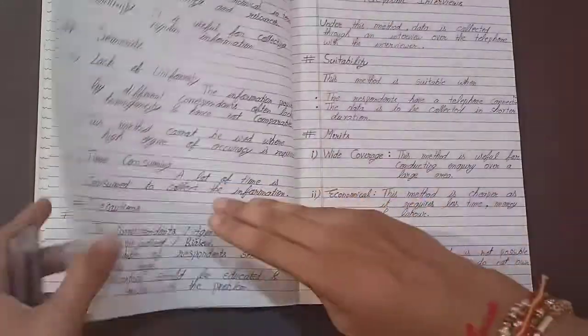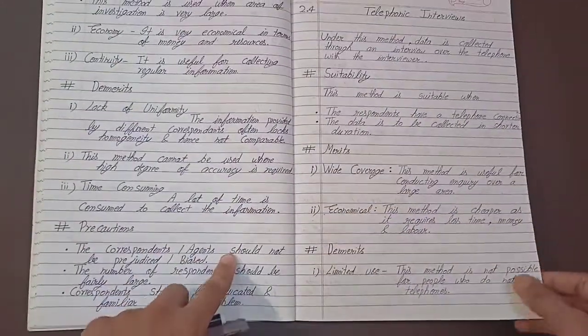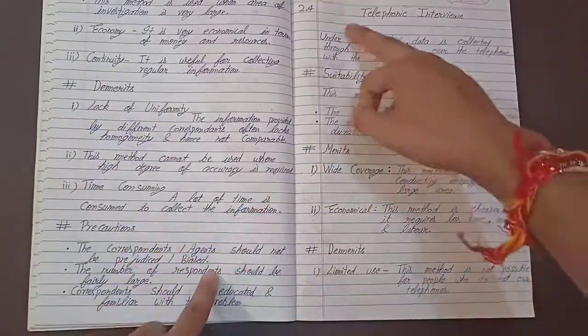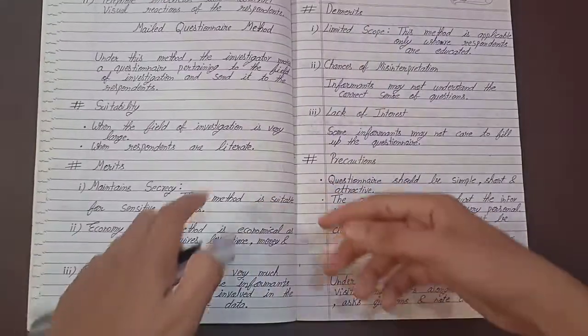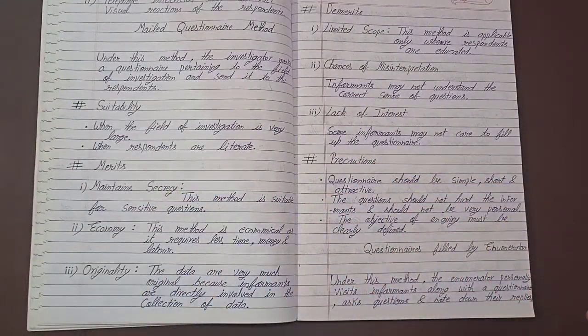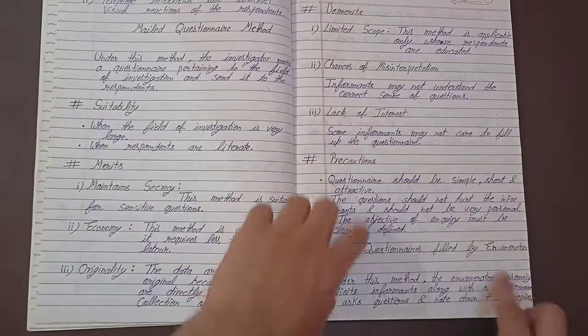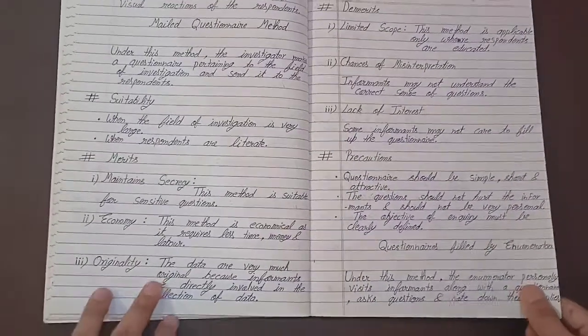Then you can see information from correspondence, lack of uniformity, telephonic interviews, merits, demerits, suitability and precautions, questions, questionnaire filled by enumerators.